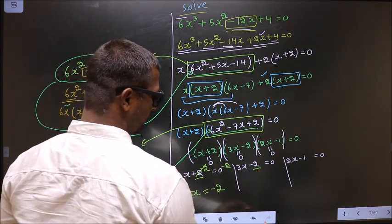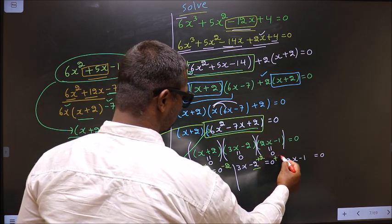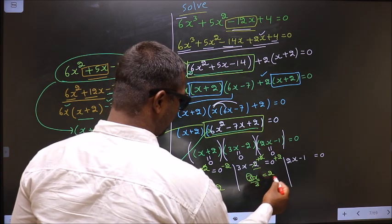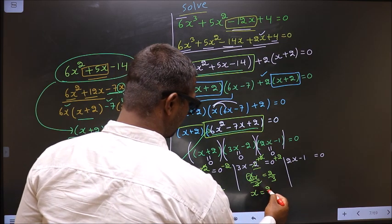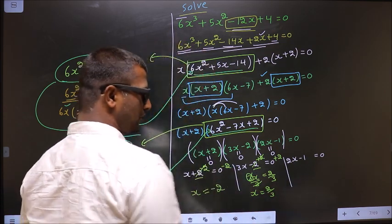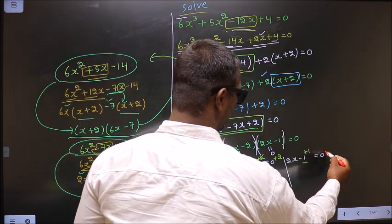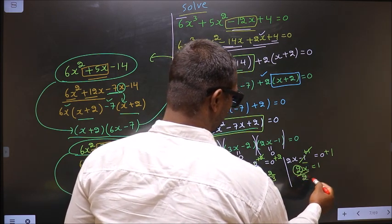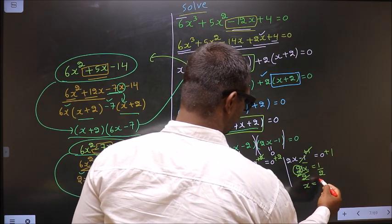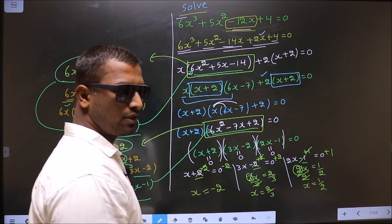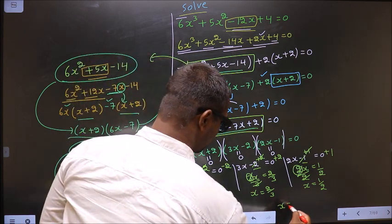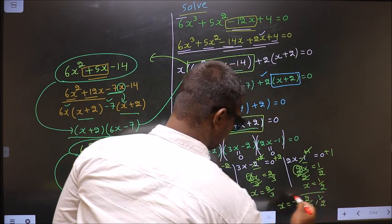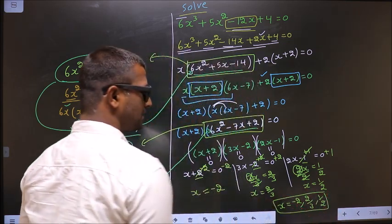For 3x - 2 = 0, I add 2 to get 3x = 2, then divide by 3 to get x = 2/3. For 2x - 1 = 0, I add 1 to get 2x = 1, then divide by 2 to get x = 1/2. So the values we got for x are -2, 2/3, and 1/2. This is our answer.